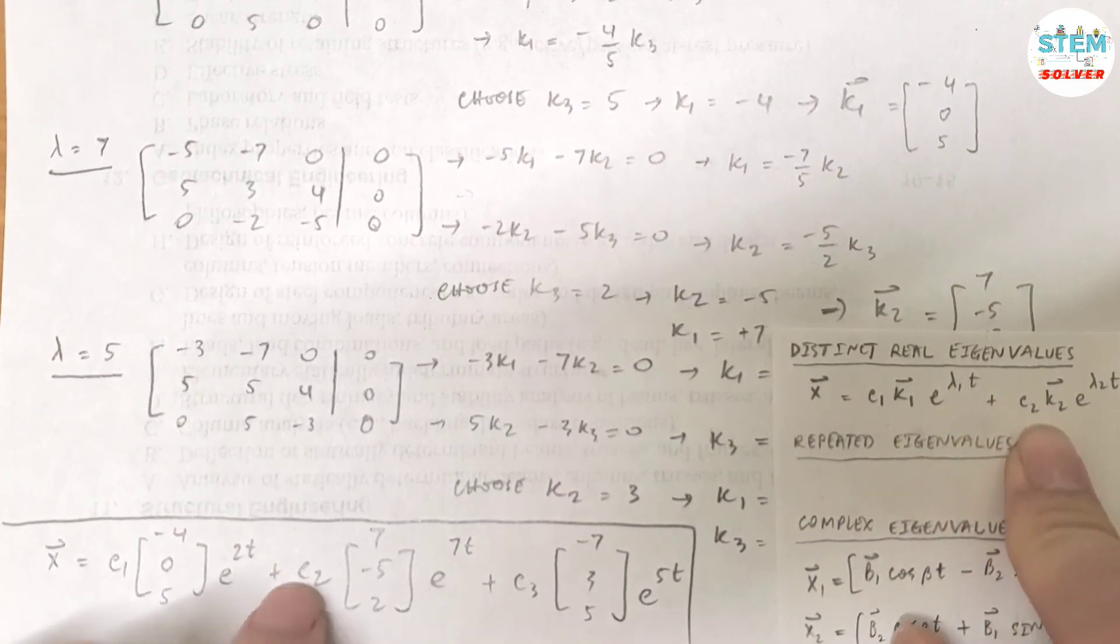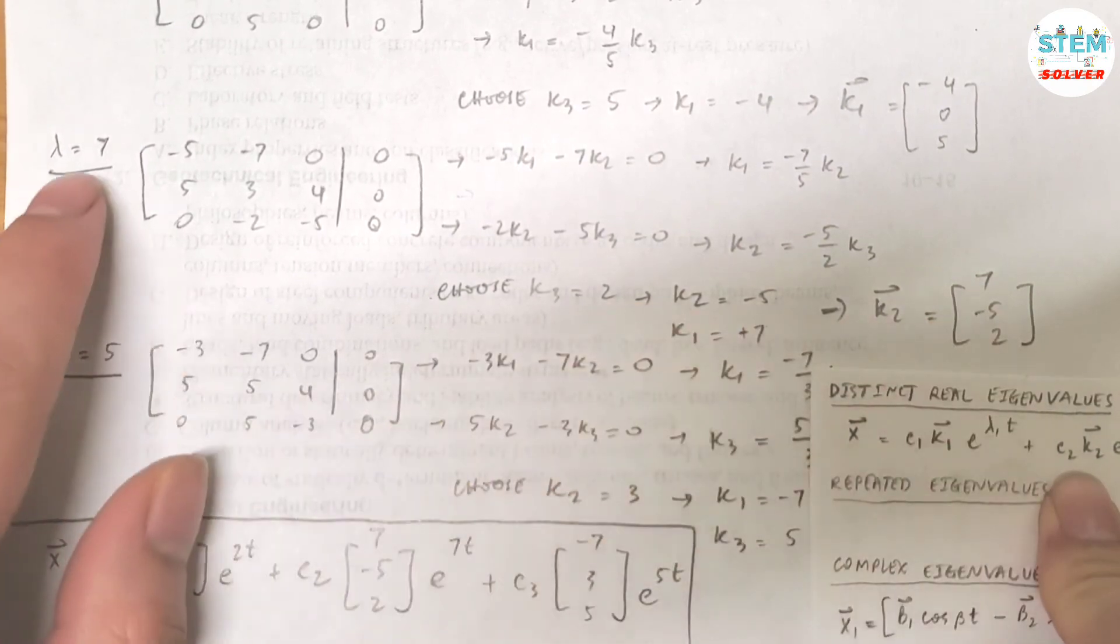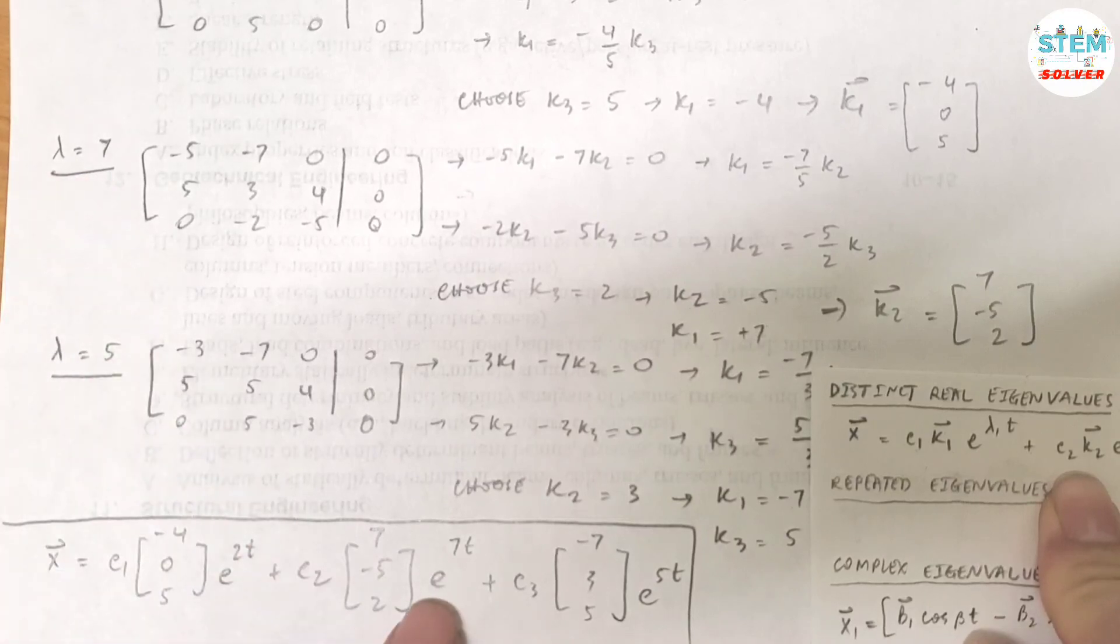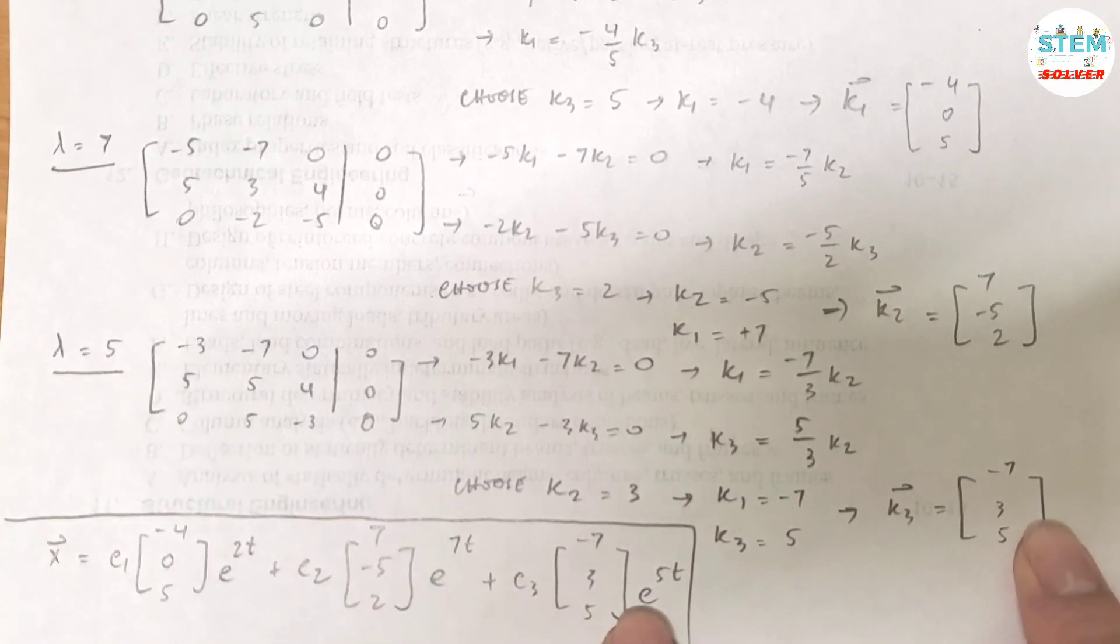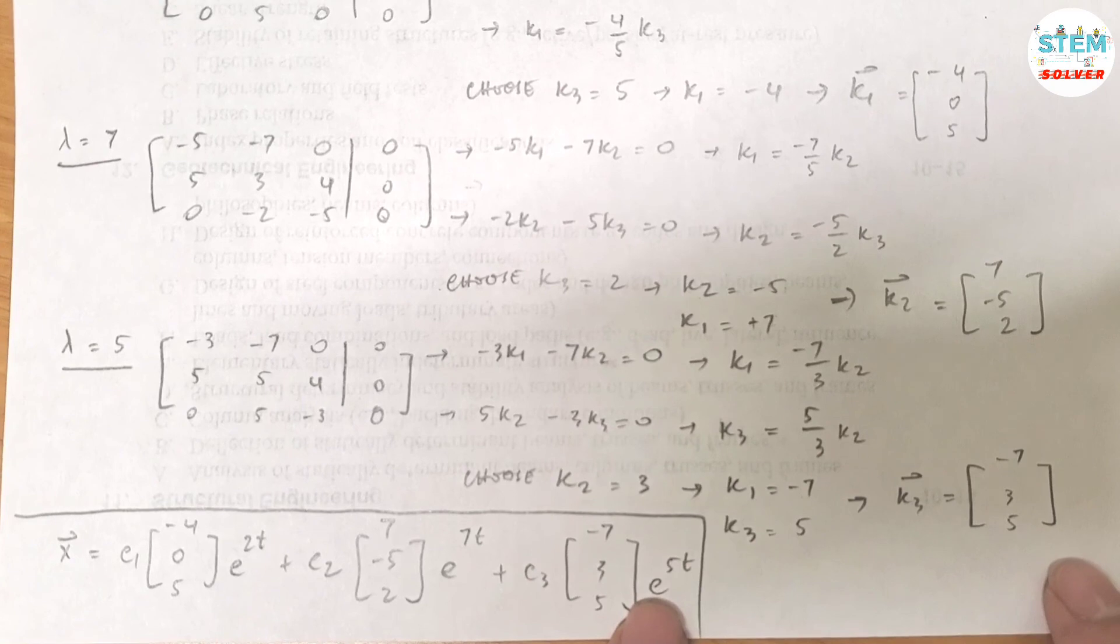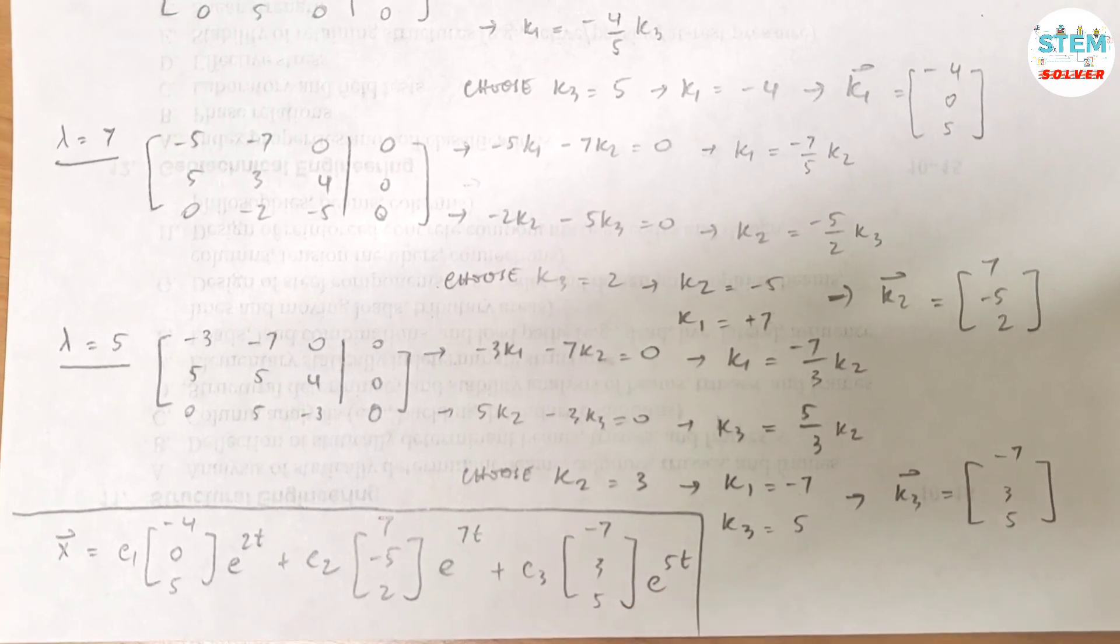Plus c2 k2 is this, and that's lambda is 7, so you have e to the 7t. Plus c3 k3, k3 is this, so lambda 3 is 5, so you have e to the 5t. All right, so that's your final answer. That's it.